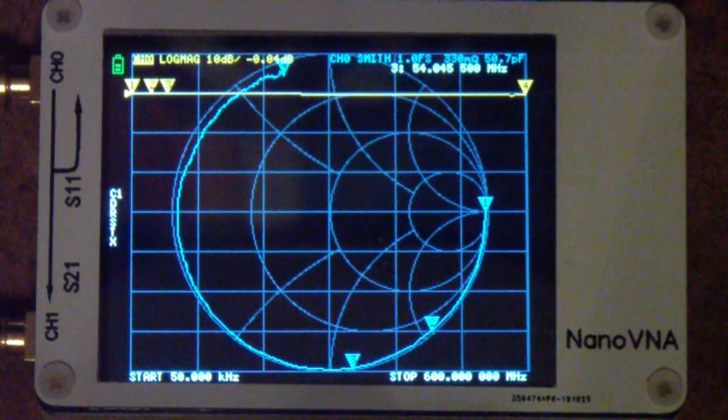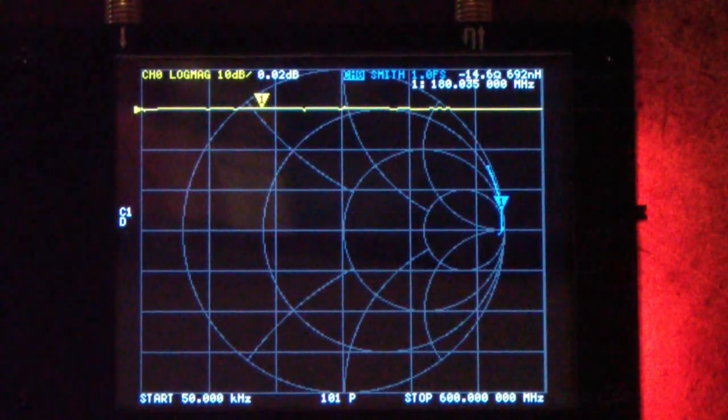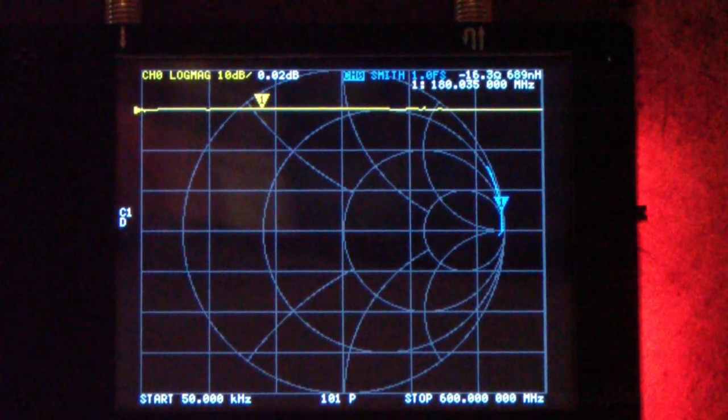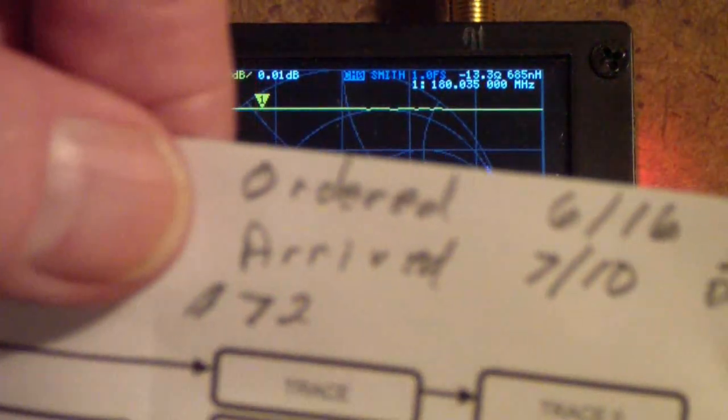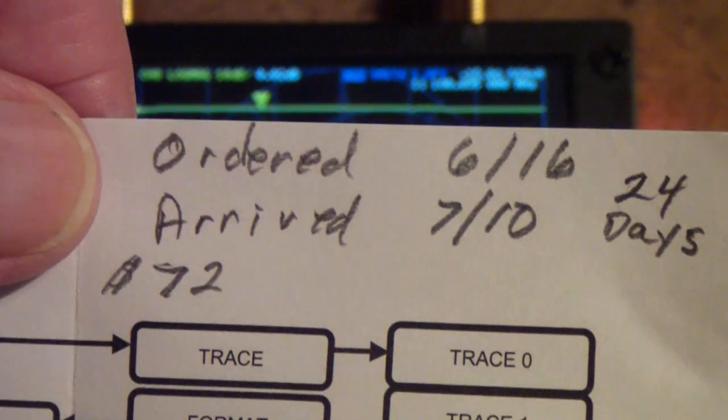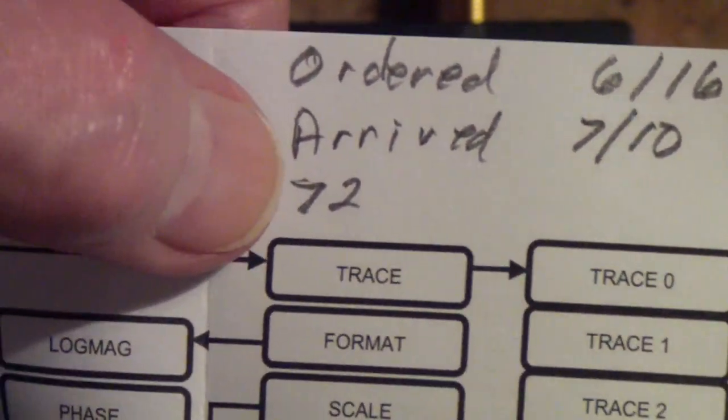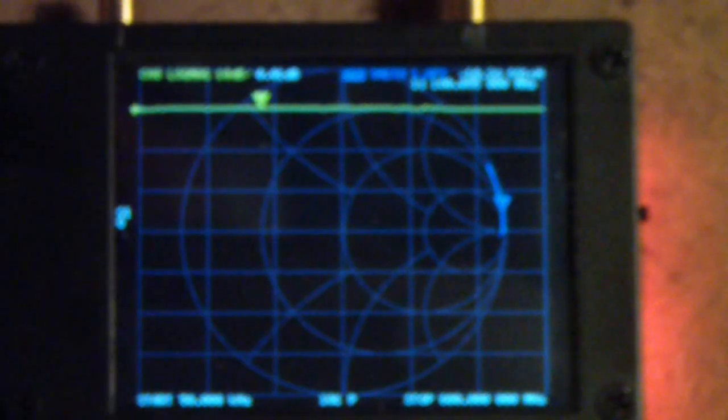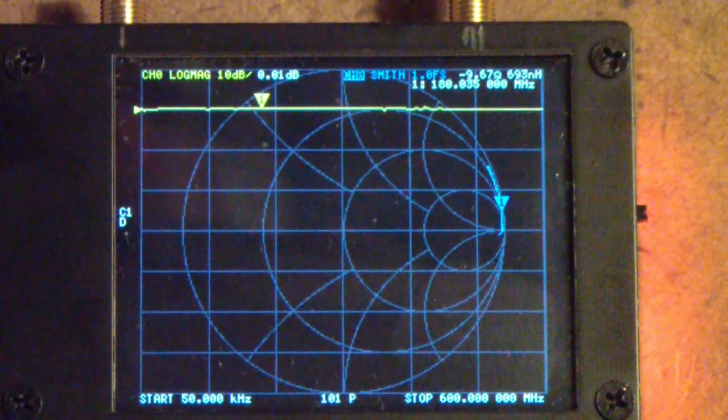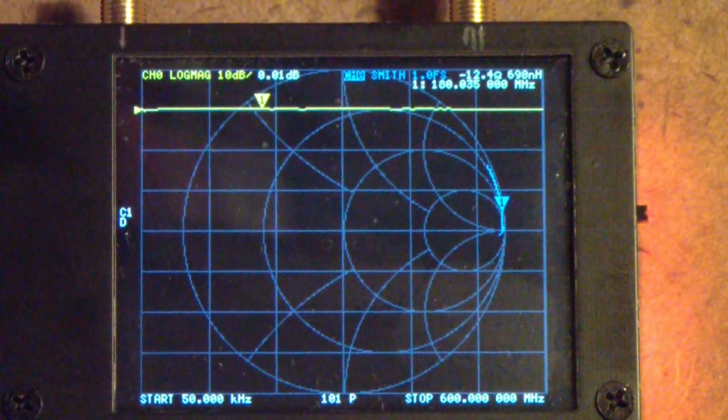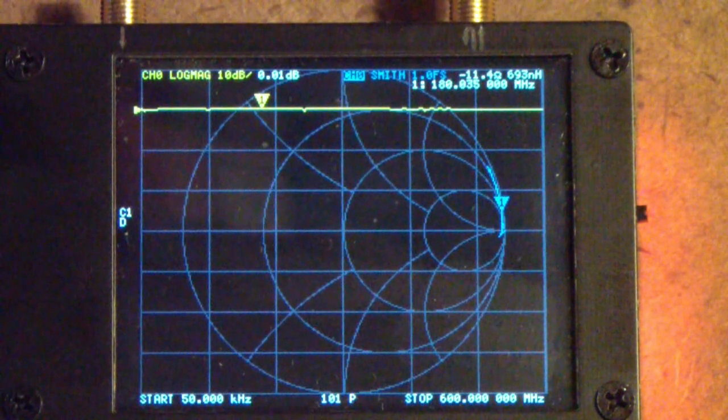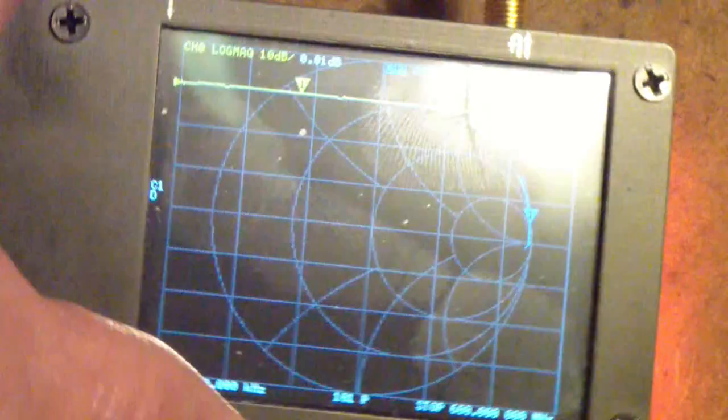This unit I got through Newegg. It's available in lots of different places. It's just called the nanoVNA V2. I ordered this from Newegg on the 16th of June. I got it on the 10th of July. That's 24 days. I paid $72. But you can get it for just under $60 if my trolling the web is any indication. But one of the differences is this one came with a battery. This is the battery.